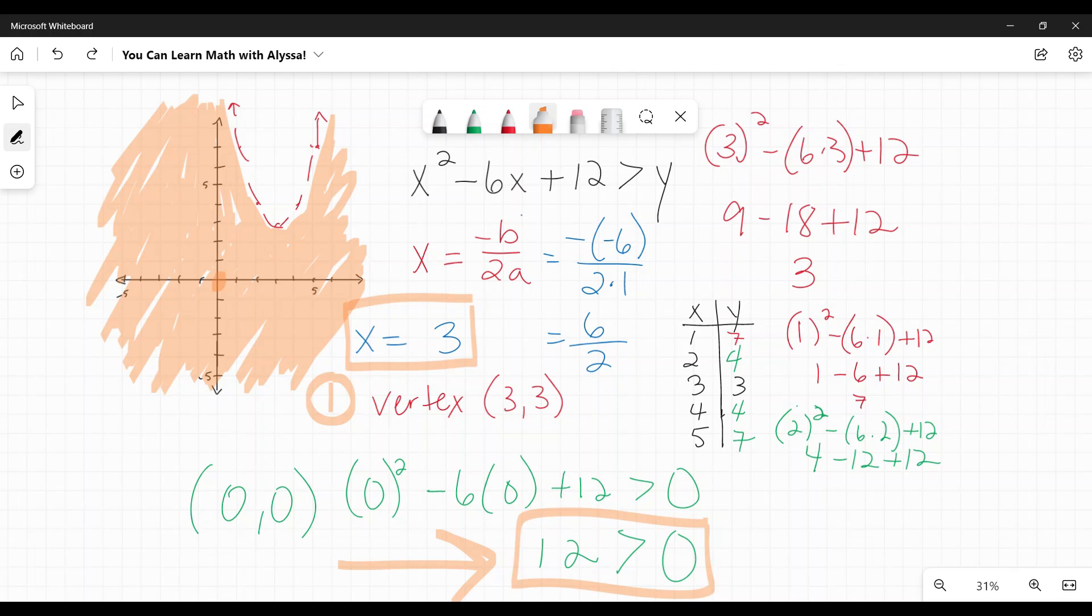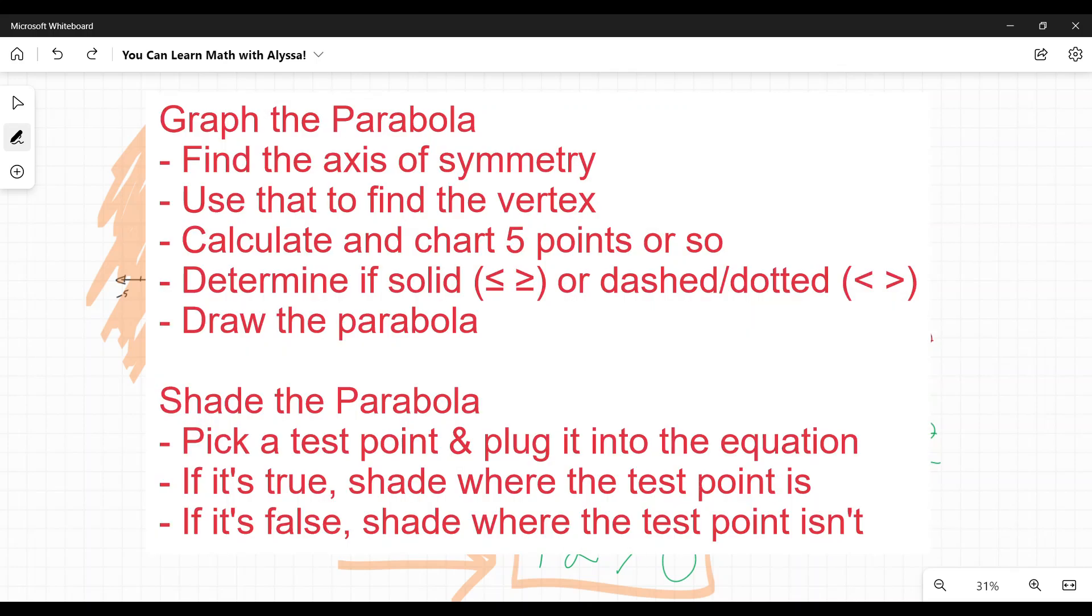So for these, again, your steps are going to be first to graph the parabola. You're going to, my recommended way, I should say, to do that is to use the axis of symmetry to find the vertex and then chart a couple of points on either side. Put those points on your graph. Then look at your sign to say what it is, if it is greater than or less than, or greater than or equal to, less than or equal to, to determine whether you need it to be dashed or a solid line. Draw that parabola. Then use a test point. I usually pick 0, 0. Plug that test point in for X and Y and see if it is a true statement. Shade the area where the test point is. But does a false statement shade the area where the test point isn't? And you're done.